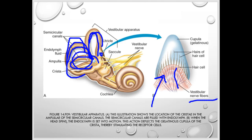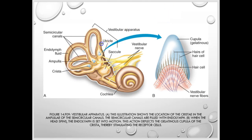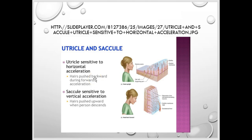The three semicircular canals sense rotational movements. The utricle and the saccule together are known as the macula, and they sense linear movements. The utricle is sensitive to horizontal acceleration — such as moving in a car — where fluid flows across upright hair cells. The saccule senses vertical acceleration, such as moving up or down in an elevator, with hair cells oriented in the other direction.